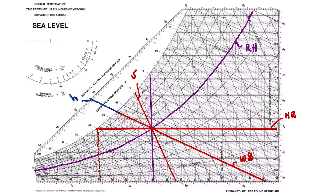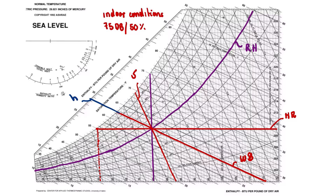Hello, this is Rumberto and this is the HVAC is my channel. Today we're going to be talking about how to read the psychrometric chart and also how to obtain the different properties of moist air. What we have here is a psychrometric chart, and we took an example of indoor conditions: 75 degrees dry bulb and 50% relative humidity.